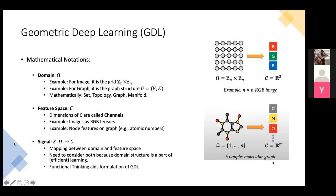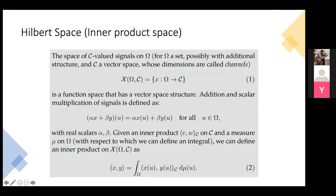In the vocabulary of signal processing, the RGB channels are three-dimensional. In the vocabulary of geometric deep learning, the mapping between the geometric domain and your feature space is called a signal — it's a function. This functional formulation fits very naturally with group theory. Another example is a molecular graph, where your geometric domain is a graph — basically an adjacency matrix with vertices — and each vertex can be assigned an atomic number, which can be a one-hot vector.